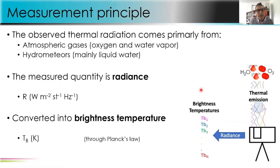The observed thermal radiation comes primarily from the atmospheric gases — oxygen, water vapor, and hydrometeors, mainly liquid water. The measured quantity is radiance, with units of watts per meter squared per steradian per hertz, which is not very convenient. In fact, radiance is usually converted into brightness temperatures, giving the convenient units of Kelvin. So brightness temperature has units of Kelvin but measures intensity of radiation.